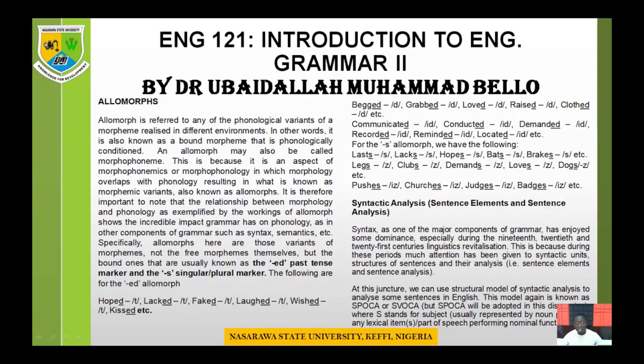Specifically, allomorphs are variants of morphemes — not the free morphemes themselves, but the bound ones. The common examples are the -ed past tense marker and the -s singular and plural marker. These two are the ones we call bound morphemes that can also be called allomorphs. It is not everywhere you see the -s or -ed inflectional morphemic items that you can simply conclude their pronunciation.